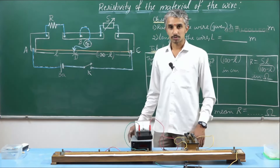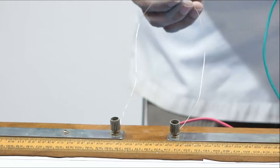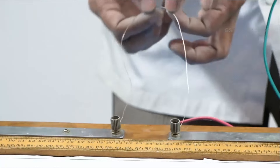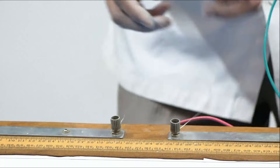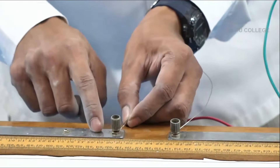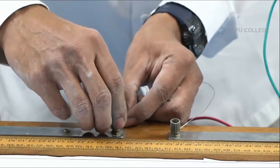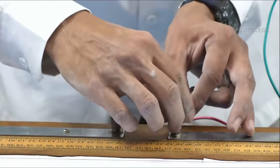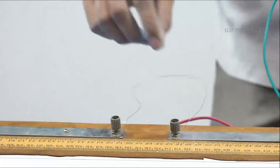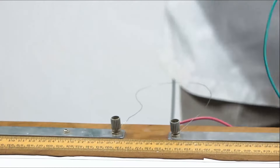Let us review the circuit once more. At the right gap, I have connected the experimental wire. An important note: when connecting the experimental wire, connect only the edges — do not wind the wire around the terminal. Winding eliminates some length of the wire from the actual experiment, which will affect your calculation. So always connect just the edges and do not wind.